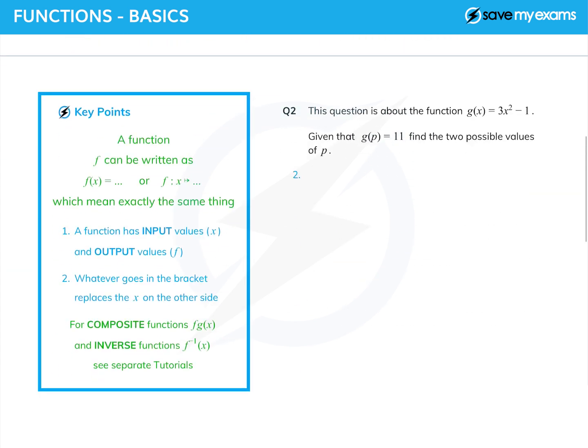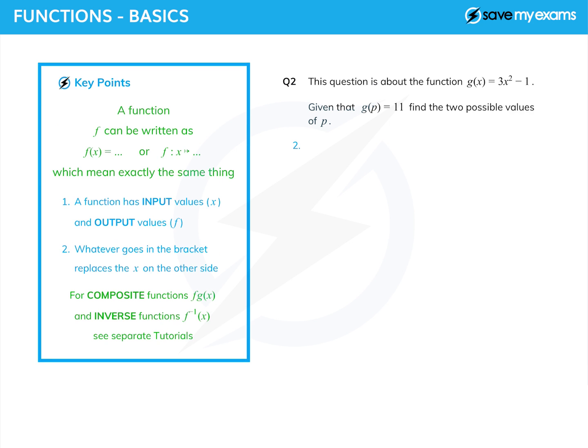Right, let's have a look at a second question. This time I've called the function g, so we have g(x) is equal to 3x² - 1, and the question is slightly different this time. It says, given that g(p) equals 11, find the two possible values of p. Well let's start by doing what we can. What is g(p)? Well we said earlier that whatever goes in the bracket replaces the x.